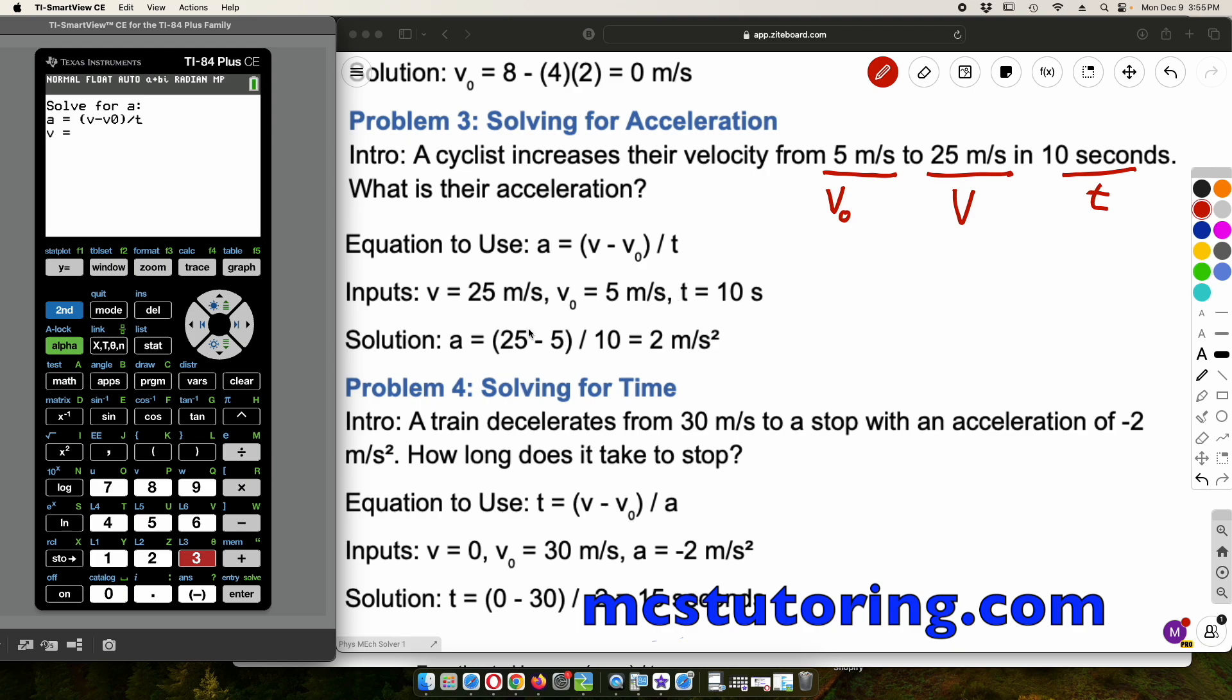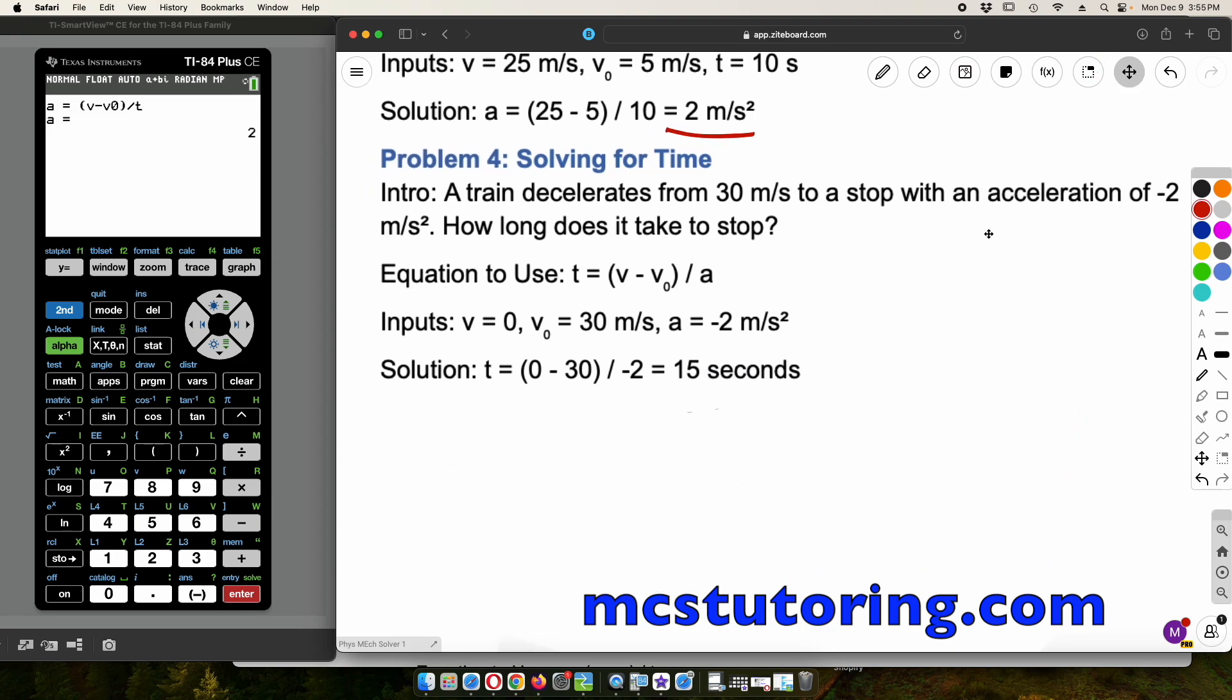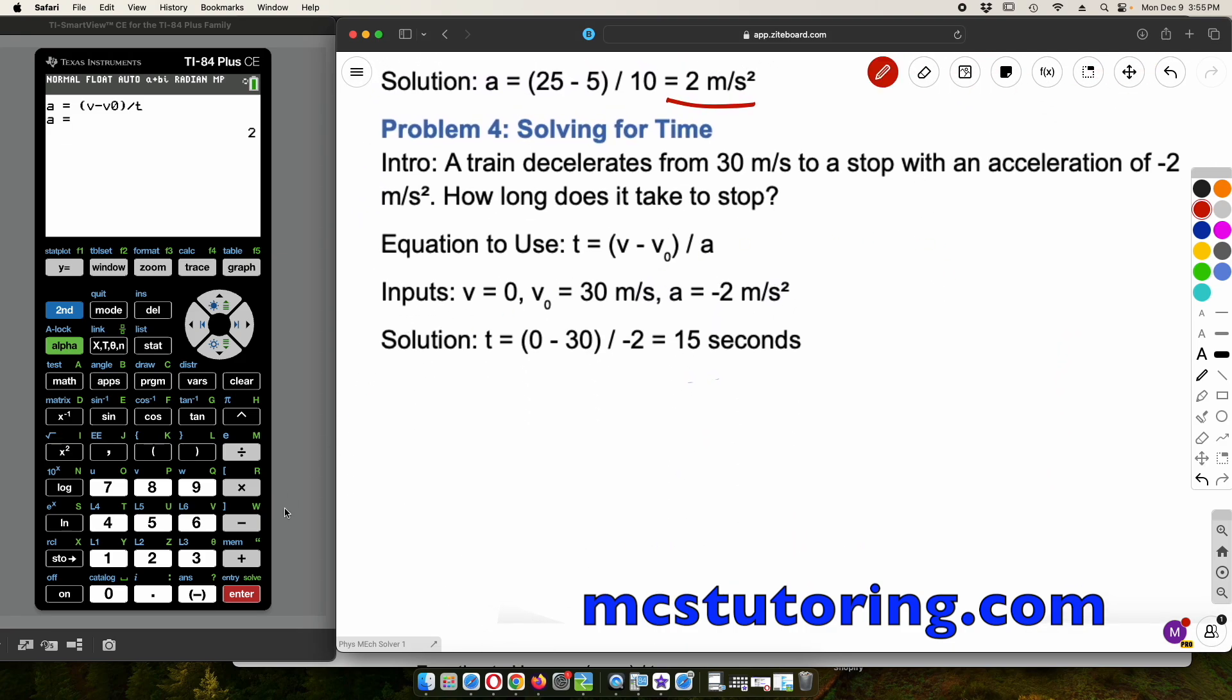Okay. And then we're going to enter everything we have. So remember the V is 25, and the V initial, or V sub 0, is 5, and the time is 10 seconds. This is great. Okay. Acceleration, 2 meters per second squared. Oh my gosh. This takes the guesswork out of rearranging equations.